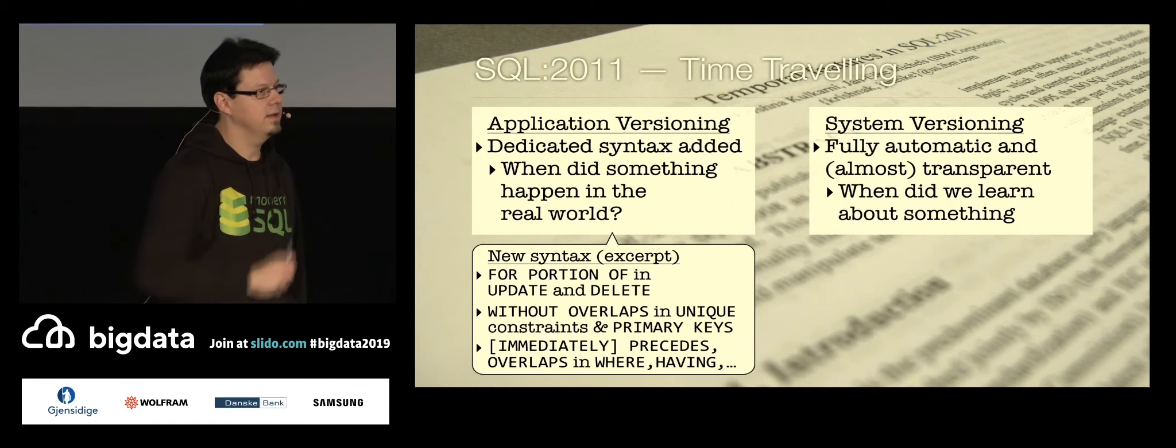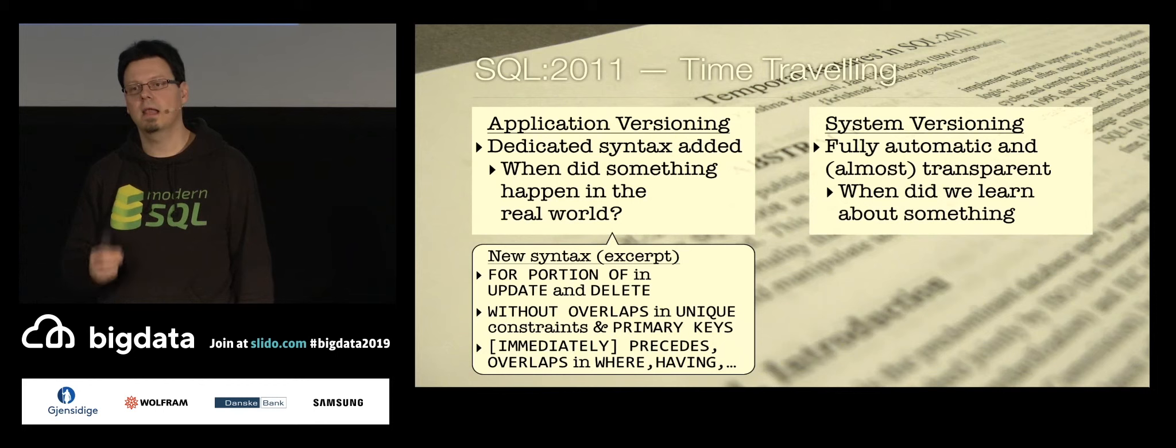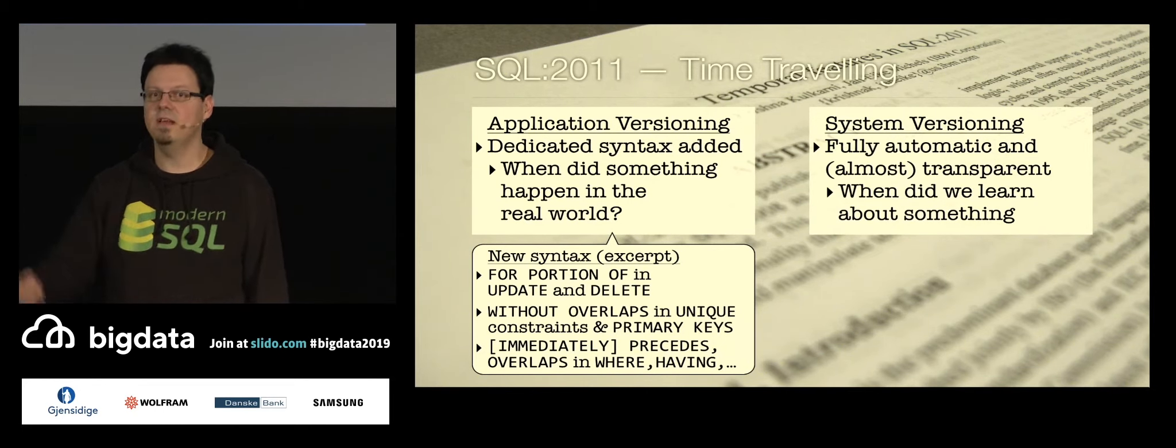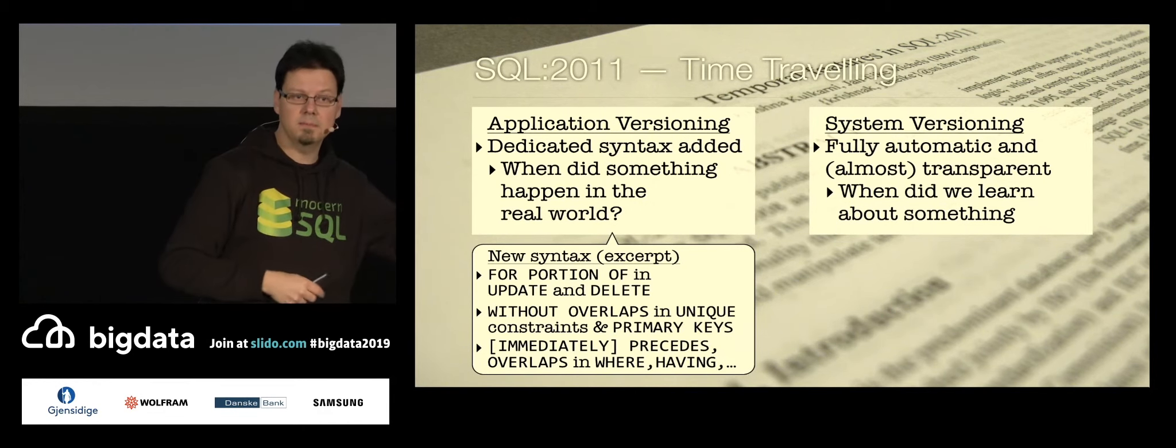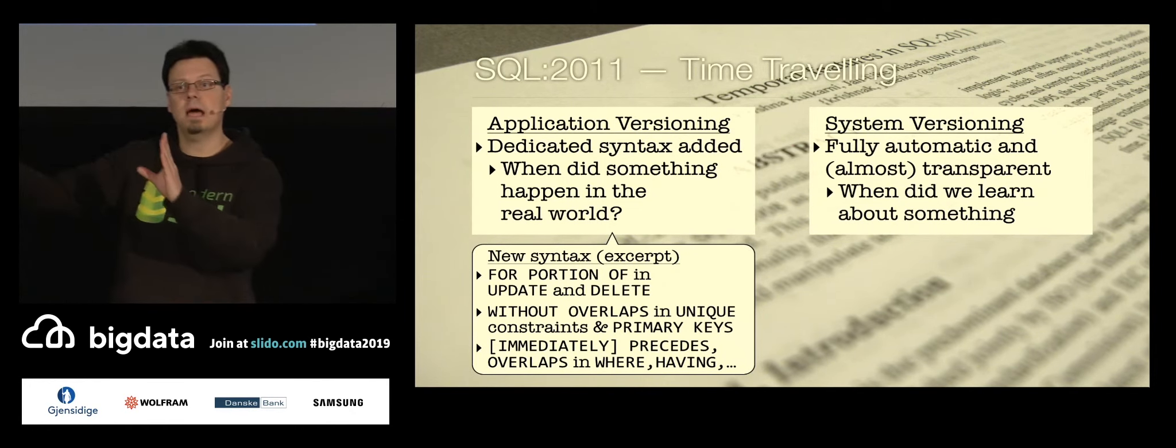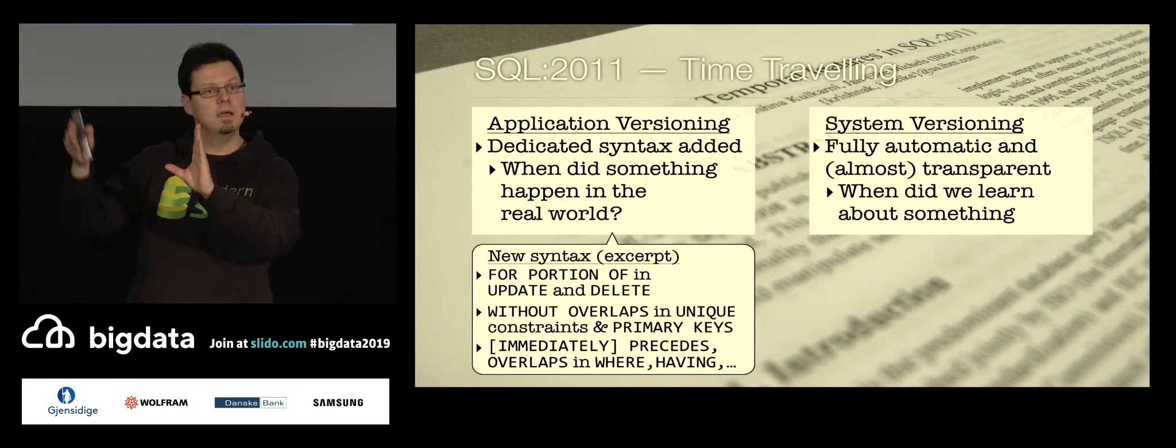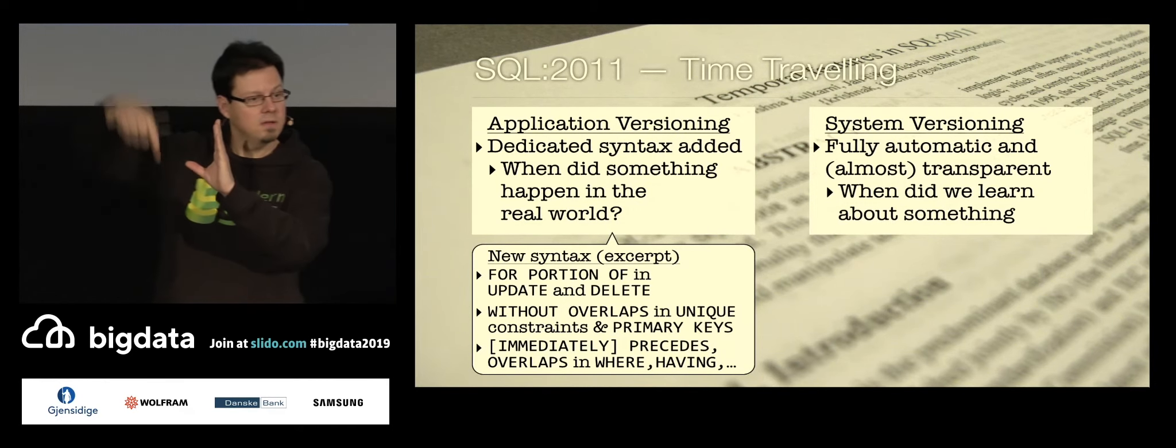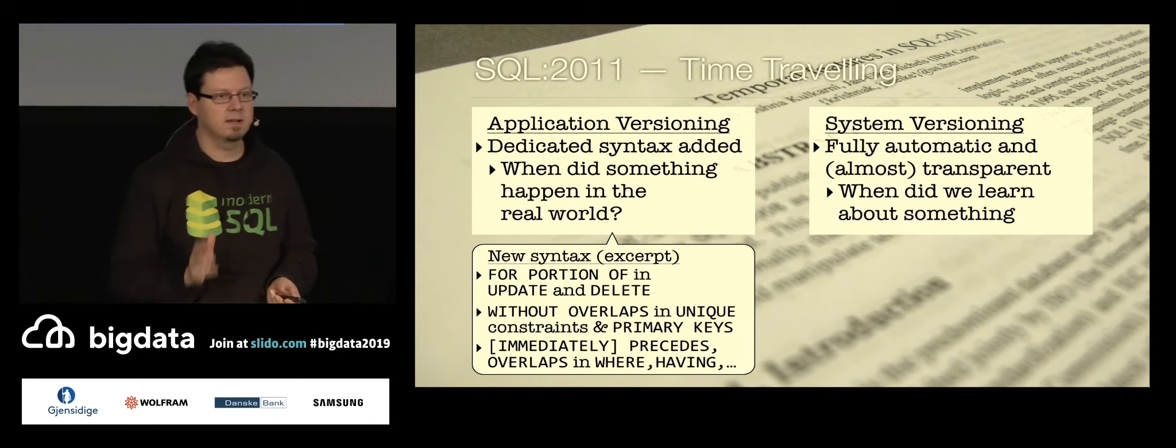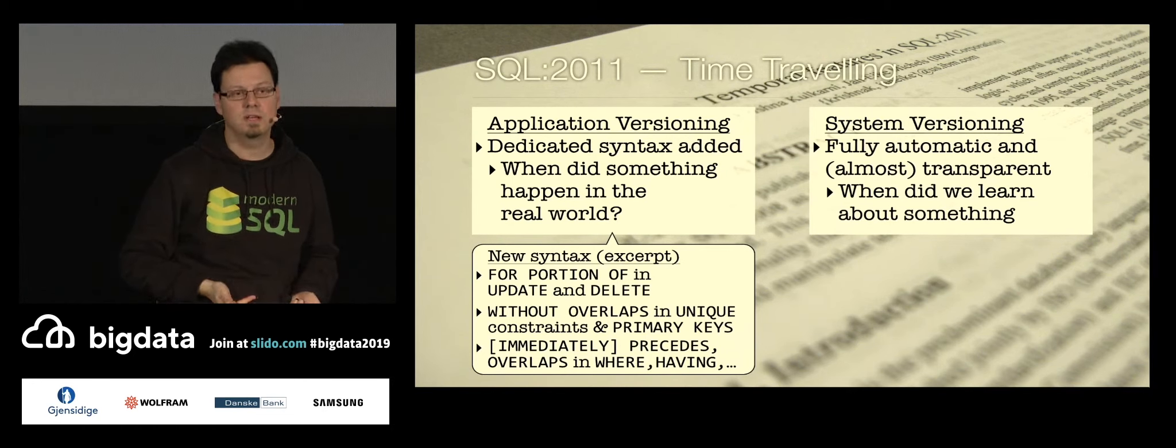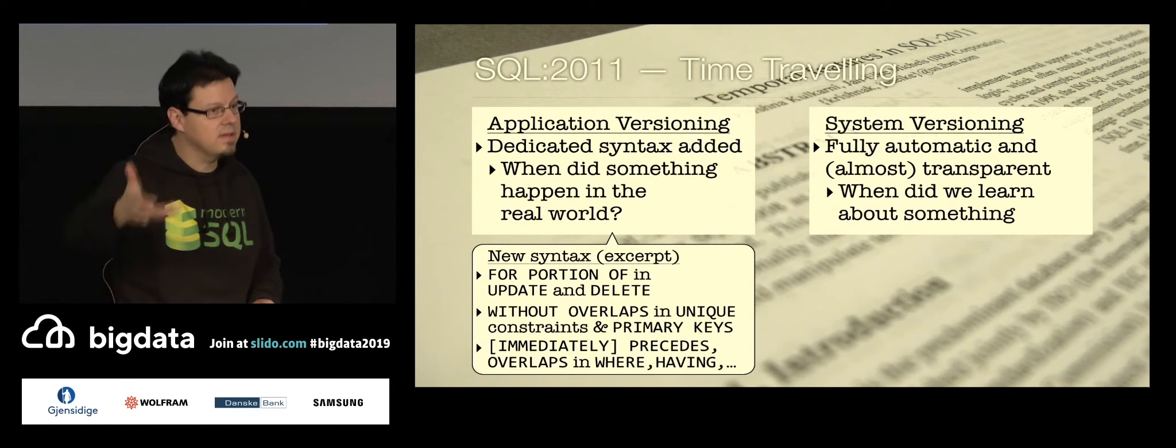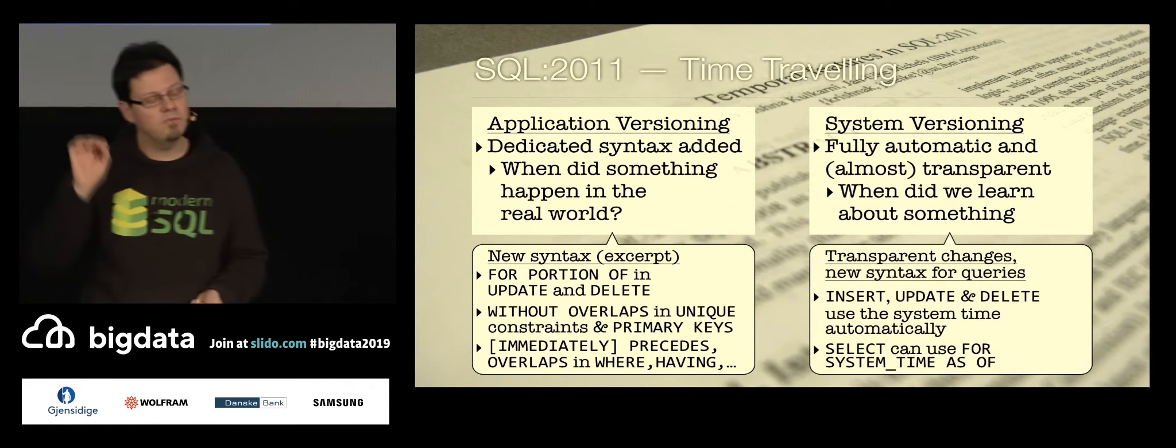Like, if we learn about today that your name has changed three weeks in the past, then we record, okay, we only learned about this today. And that can be used to explain why in the time between, in those three weeks, we have still mailed you something with the old name on. Okay? And the great thing about system versioning, and that's also the reason why it's called system versioning, is we can delegate everything there to the system, to the database system. There's only very little syntax. It's mostly transparent.